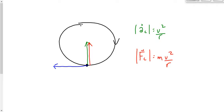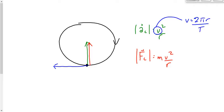Sometimes we don't have the value of v. If we have the force or the acceleration, we can rearrange and solve for v. If we can't do that and we don't have the acceleration or the force, we find speed another way. For an object in uniform circular motion, v equals d over t, and specifically in the context of a circle, we change that to 2πr over T. T stands for the period — the time for one complete cycle.